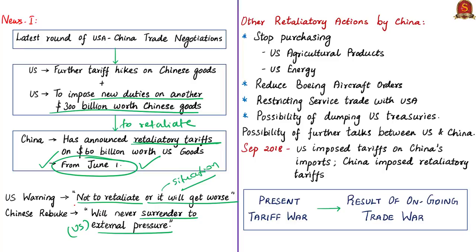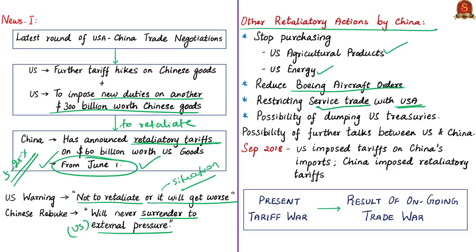The new rates will target American imports with tariffs ranging from 5% to 25%. In addition to tariff hikes, China could stop purchasing U.S. agricultural products and energy, reduce orders for Boeing passenger aircraft, restrict trade and services with the U.S., and Chinese scholars are discussing the possibility of dumping U.S. treasuries — referring to U.S. currencies and bonds. Both sides have indicated talks will continue, possibly at the G20 summit next month, but no new talks are currently scheduled.